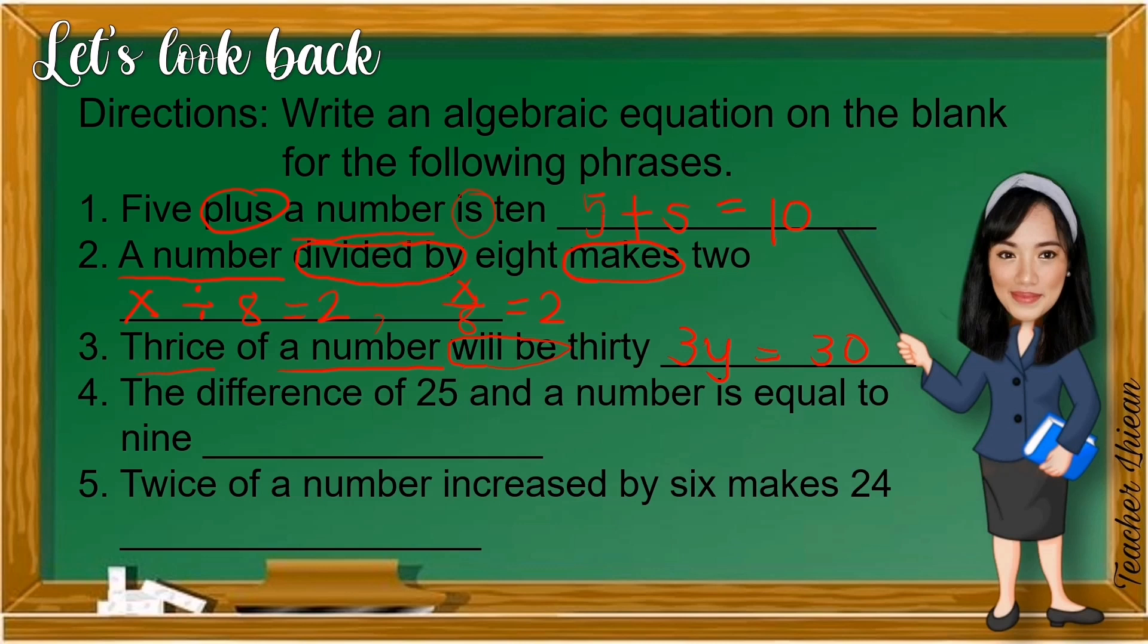Number 4, the difference of 25 and a number is equal to 9. Difference meaning we have to use subtraction. A number - we can use any letter from the alphabet. Is equal to - so, 25 minus N is equal to 9.